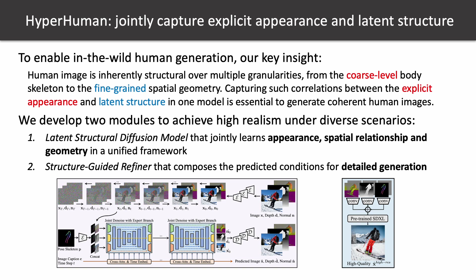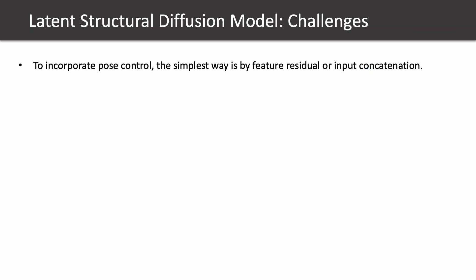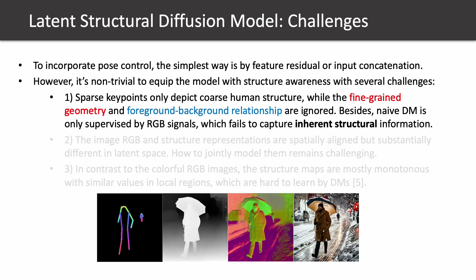To incorporate post-control, the simplest way is by feature residual or input concatenation. However, it is non-trivial to equip the model with structural awareness due to several challenges. First, sparse key points only depict coarse human structure, while fine-grained geometry and foreground-background relationships are ignored. Besides, a naive diffusion model is only supervised by RGB signals, which fails to capture inherent structural information.